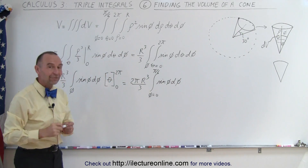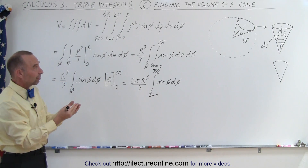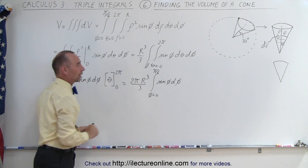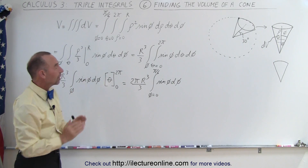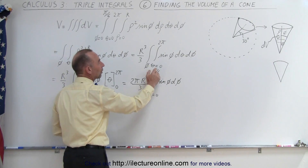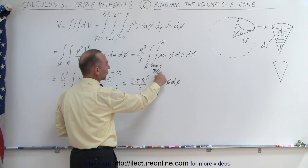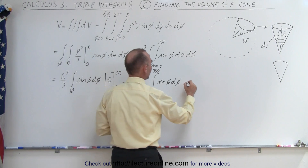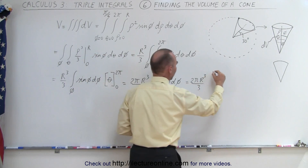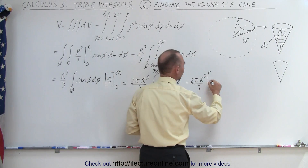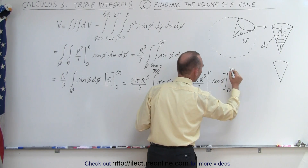Up until now, we have the same result as in the previous video, as if we're integrating over a semi-sphere. It doesn't matter whether we're integrating over a semi-sphere, a cone, or the whole sphere — we always end up with this portion. The last portion is what makes the difference: the limit of integration determines how much of the full sphere we use. In this case, we only integrate from zero to pi over six. When we integrate sine of phi d phi, we get negative cosine of phi evaluated from phi equals zero to phi equals pi over six, or 30 degrees.